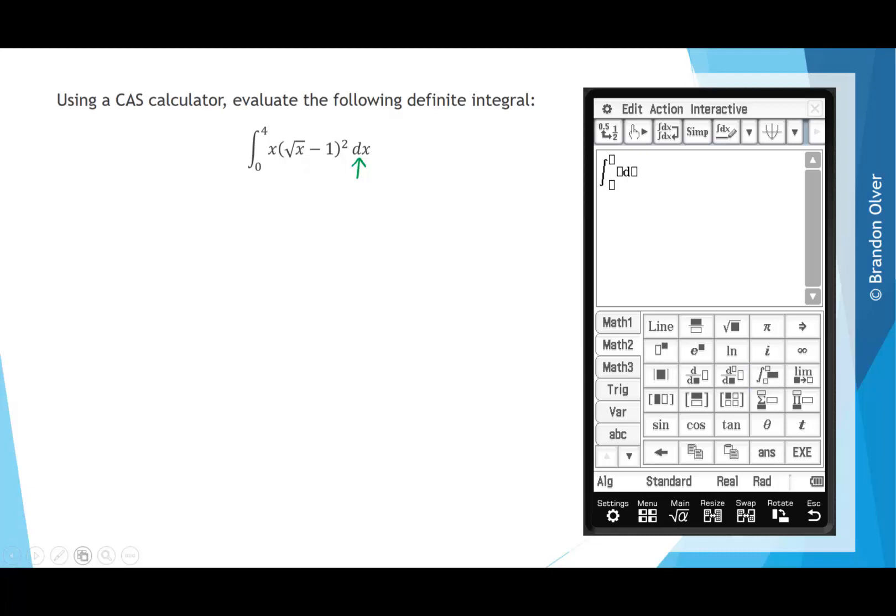And because we're evaluating a definite integral, we need to put terminals in here. And for our question, it goes between zero and the upper terminal of four. For the function that is x multiplied by the square root of x, subtract one, all squared. And we want to integrate that with respect to x, so we need dx on the end of this input.